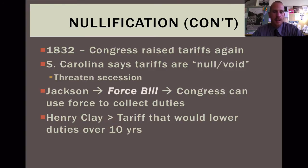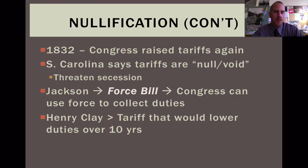Luckily, Henry Clay steps in. He's known as the great compromiser throughout this whole time period, even through the 1850s. What he proposes is a tariff that would lower customs duties over a 10-year span. So each side still gets a little bit of what they want — a give and take from each side. Luckily South Carolina agrees to this and we avoid the little civil war that could potentially have happened.